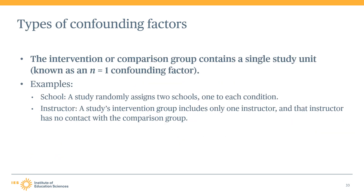One of the most common types of confounding factors occurs when a single study unit — such as a teacher, classroom, school, or district — aligns with one and only one study condition. The WWC often refers to this as an N equals one confounding factor. To avoid this type of confounding factor, a study must have at least two units in each condition. In group design studies with two conditions, this means the minimum analytic sample size is four. Anything less would result in an N equals one confounding factor.